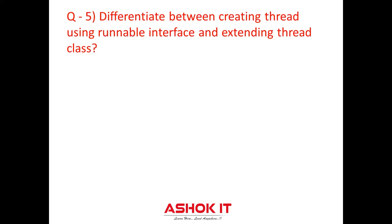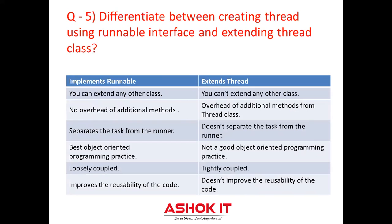Question five: What is the difference between creating a thread using Runnable interface and extending Thread class? When you are creating a thread by implementing Runnable interface, you can extend any other class also. But if you are creating a thread by extending Thread class, you cannot extend any other class, since multiple inheritance is not supported in Java. If you are implementing Runnable interface, you can extend n number of classes. Extending Thread class gives some additional methods from Thread class. Implementing Runnable interface separates the task from the runner — it is an object-oriented practice — whereas extending Thread class does not separate the task from the runner, and is not an object-oriented practice. Implementing Runnable is loosely coupled, whereas extending Thread is tightly coupled.